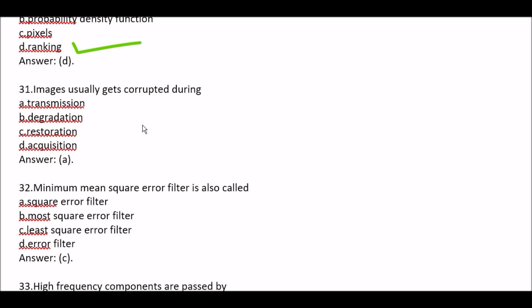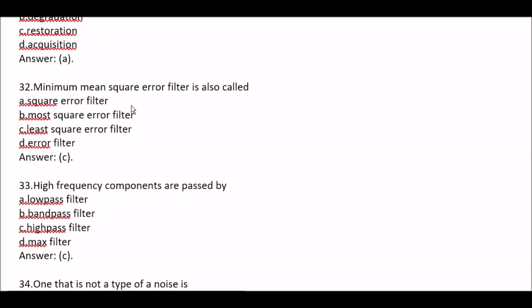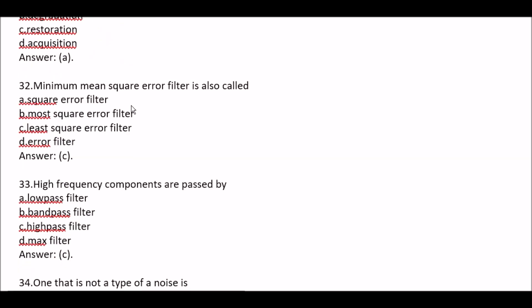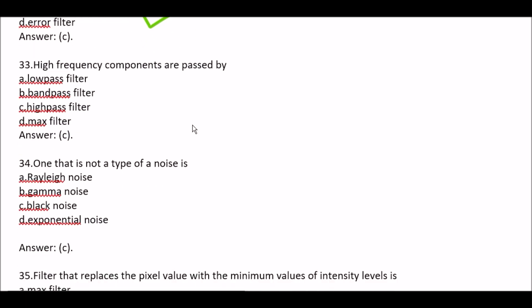Question 31: Images usually get corrupted during — Option A Transmission, Option B Degradation, Option C Restoration, Option D Acquisition. Right option is Option D, Acquisition. Question 32: Minimum mean square error filter is also called — Option A Required error filter, Option B Most required error filter, Option C Least square error filter, Option D Error filter. Right option is Option C, Least square error filter.